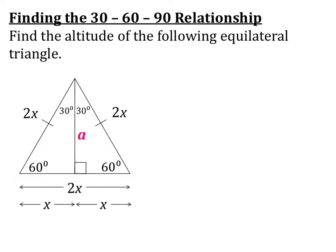That means it cuts it into two equal pieces, and since we have a length of 2x, each of those pieces now has a length of x. Using the Pythagorean Theorem, we can find our altitude a by focusing on just one half of our equilateral triangle.